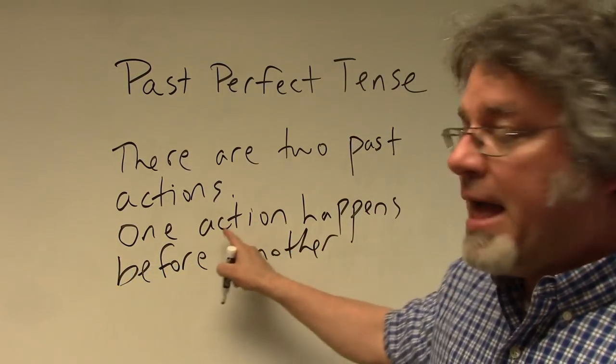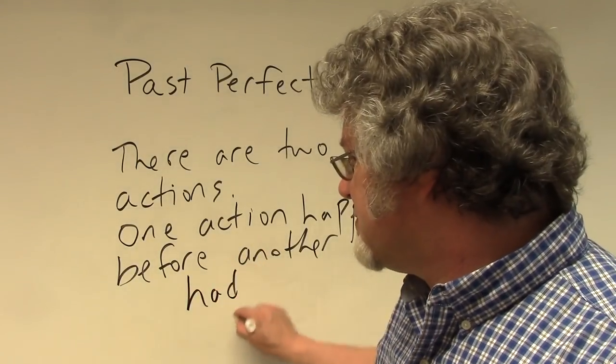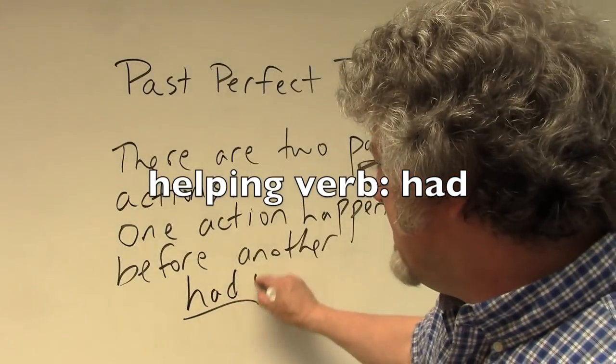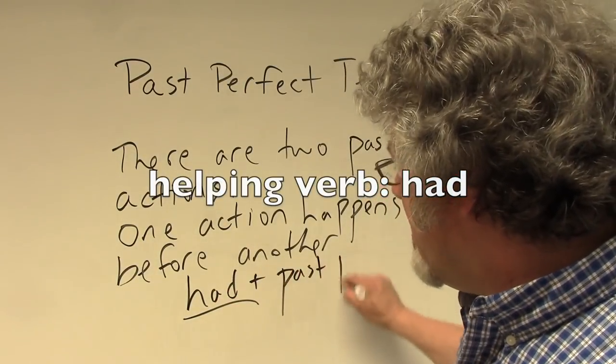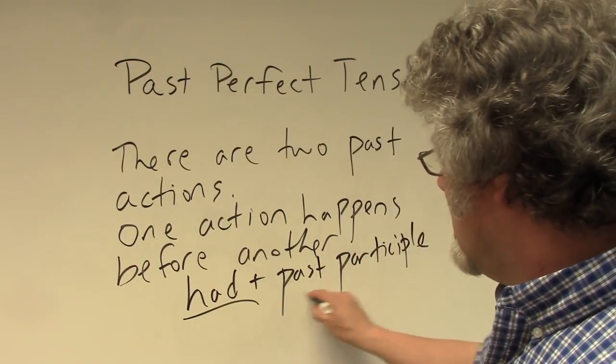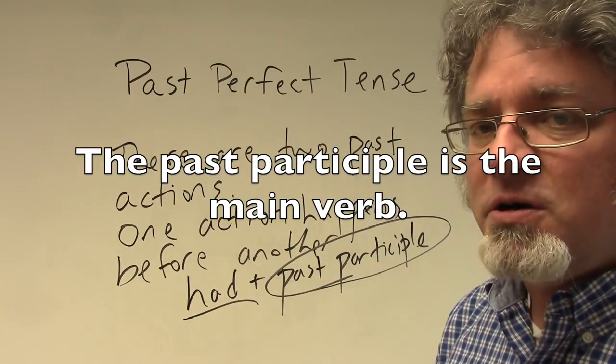One action happens before another. The action that happens before another action is the one that uses the past perfect tense, where you're using the helping verb 'had' and the past participle. The past participle is the main verb.